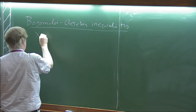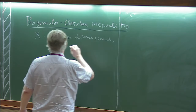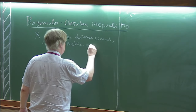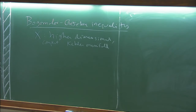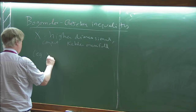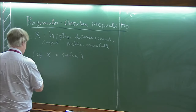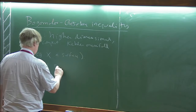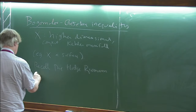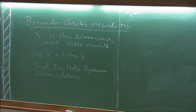Here x is a higher-dimensional compact, let's say Kähler, manifold. For some parts of the proof, projective would be better. Just for example, let's take x as a surface. I'd like to recall the Hodge-Riemann bilinear relations. Let's just do this by doing a calculation on a surface.